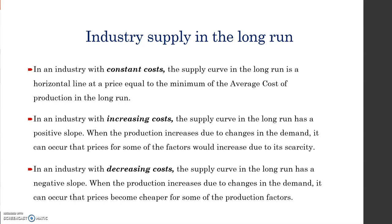This is the point where profits will be zero. If we have an industry with increasing costs, the supply curve in the long run has a positive slope. When production increases due to some change in demand, prices for some factors may increase due to scarcity, giving the industry supply a positive slope.